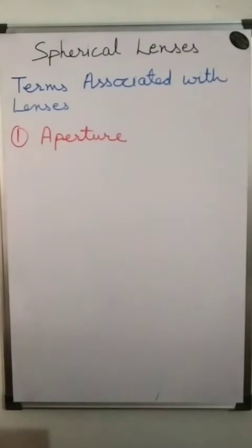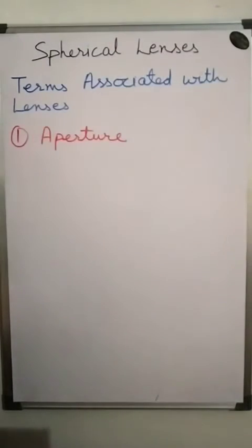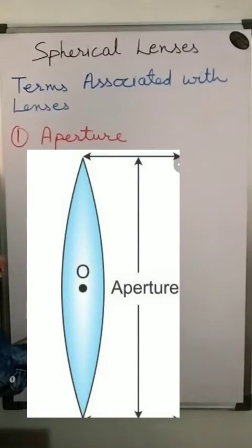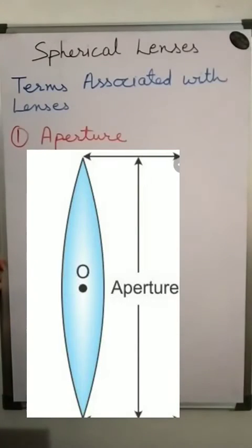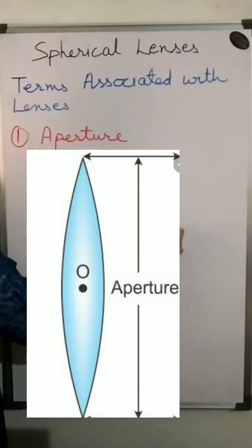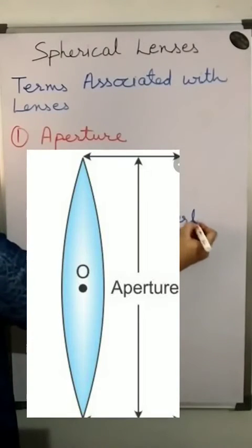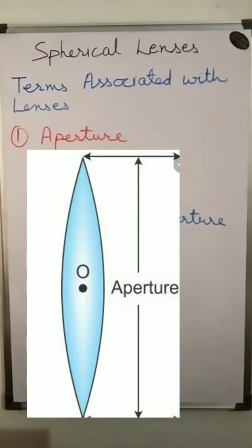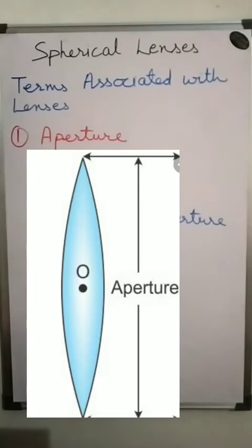Now I will explain the terms associated with lenses. The first term is aperture. Suppose you have this lens — this diameter here is the aperture of the lens. The aperture means the diameter of the reflecting surface of a lens is known as its aperture.